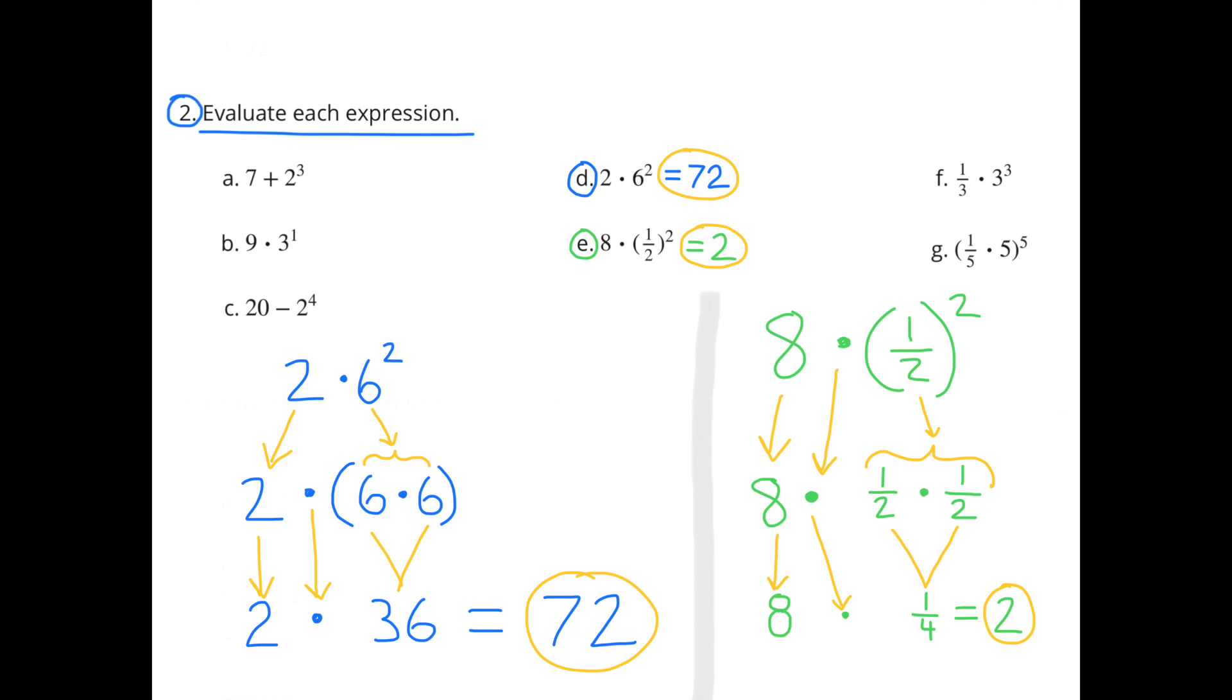E, 8 times 1 half squared. 8 times 1 half squared is the same as 8 times 1 half times 1 half. And 1 half times 1 half is 1 fourth. So 8 times 1 fourth is 2.